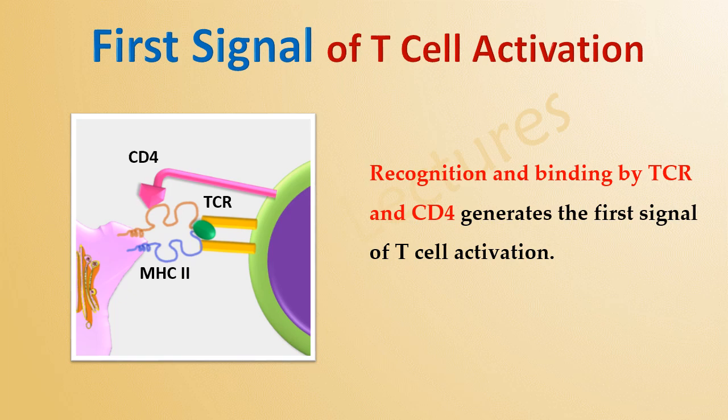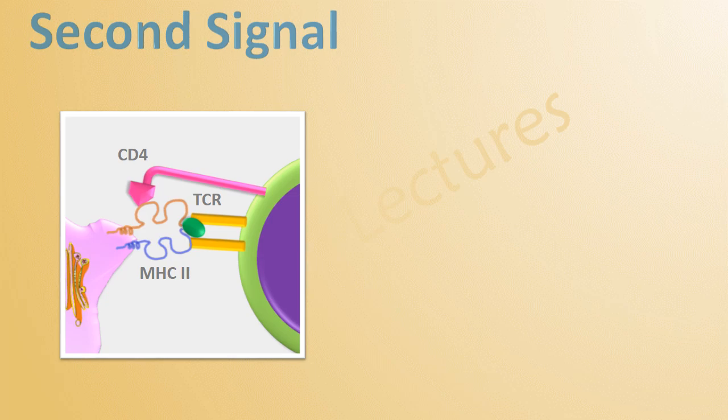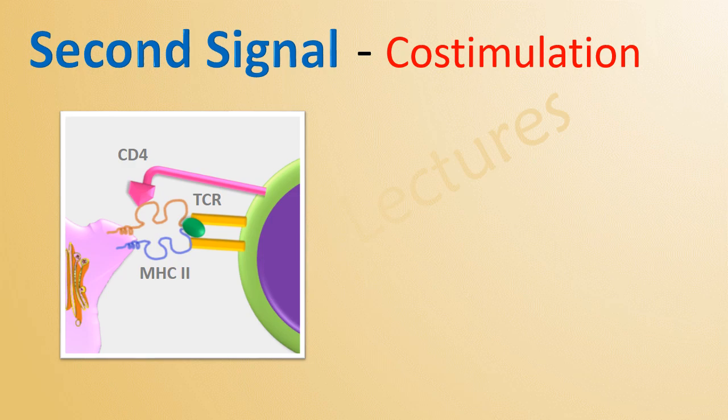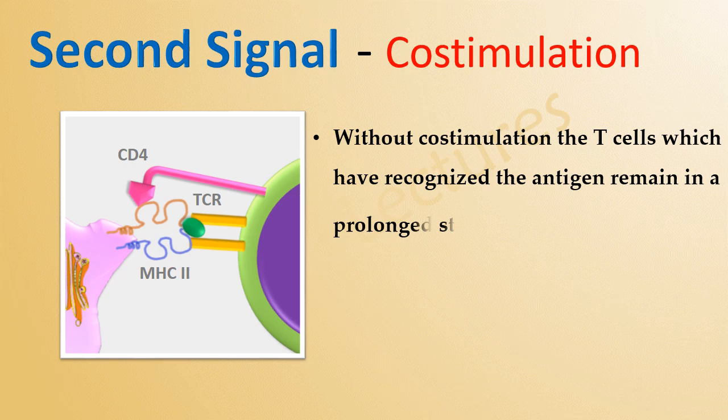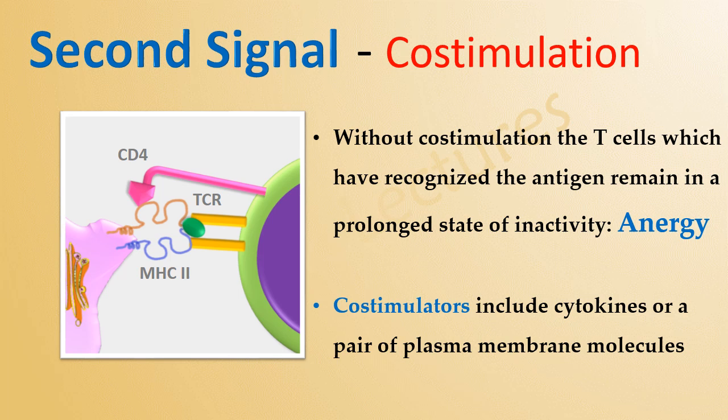For full T-cell activation, a second signal is required. The second signal enhances the first signal and is known as co-stimulation. Without co-stimulation, T-cells which have recognized the antigen remain in a prolonged state of inactivity known as anergy. Co-stimulators include cytokines or a pair of plasma membrane molecules.